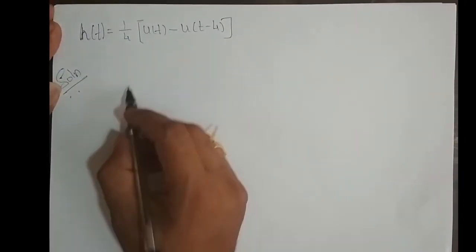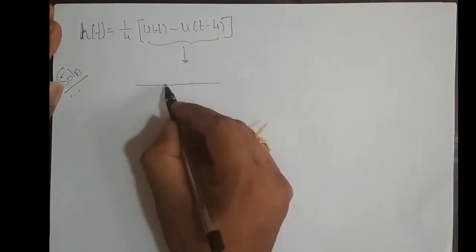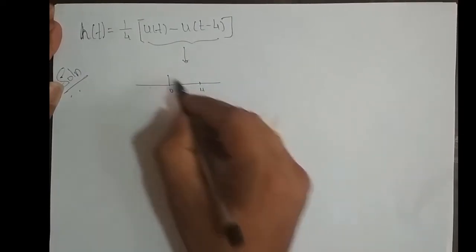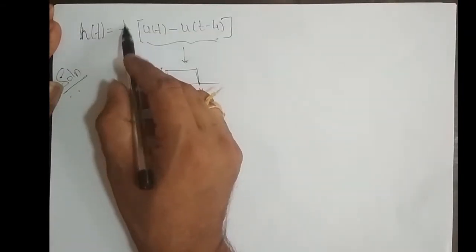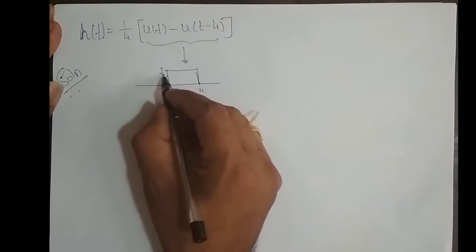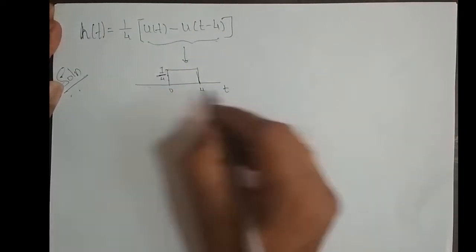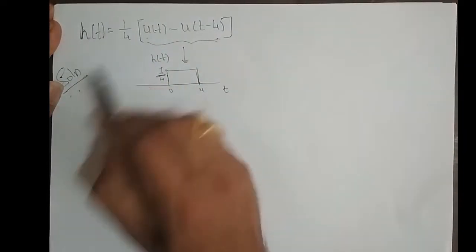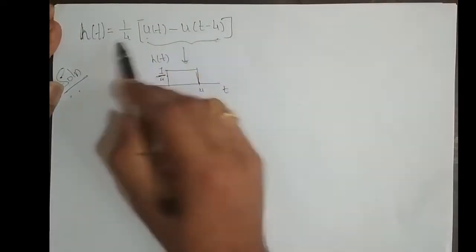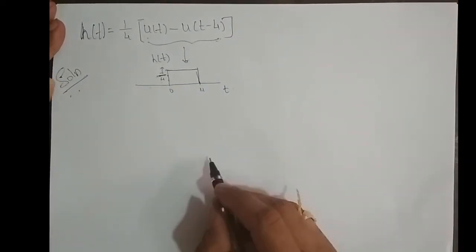Solution. We will sketch this signal. This signal is nothing but a rectangular pulse starting from 0 to 4, and its amplitude is 1. This signal is scaled by a factor of 1/4. So this amplitude becomes 1/4. This is t and h(t). This is a rectangular pulse whose amplitude is scaled by a factor of 1/4, giving an amplitude of 1/4.